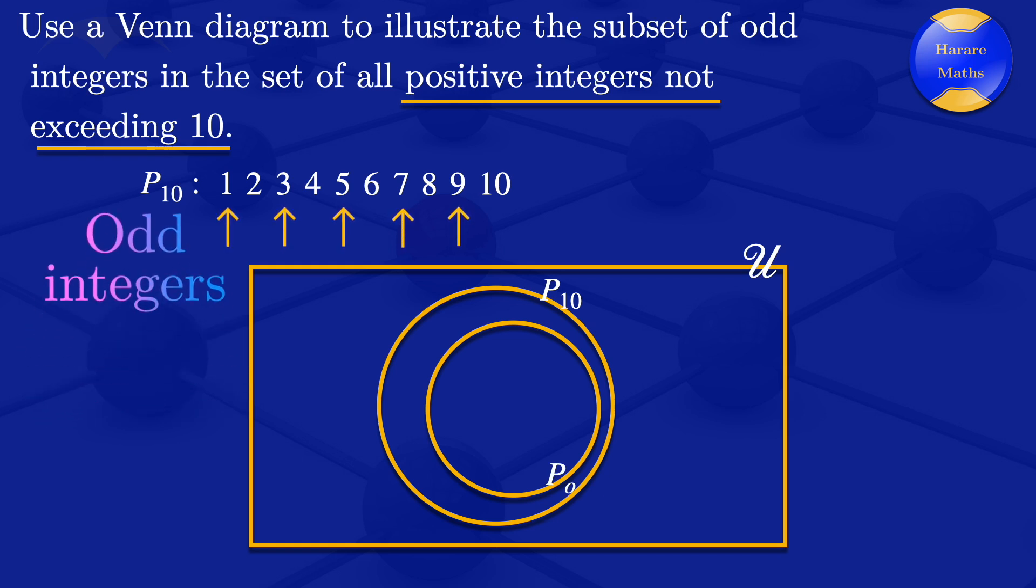Odd integers are integers that cannot be divided by two evenly. And the odd integers that we are having there are 1, 3, 5, 7, and 9. So I'll put those odd integers into the set, this one, P0. So all of those integers, they are in that set.